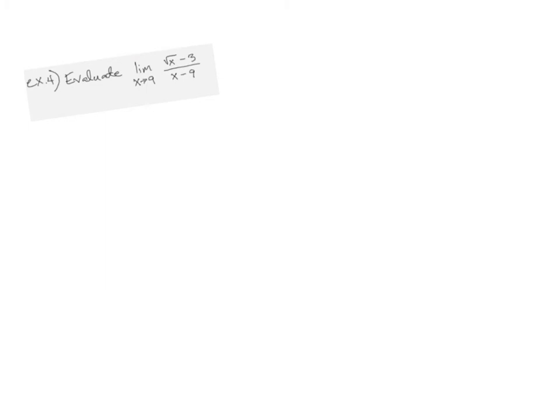So we've got two tools in our tool belt: simplify and factor. The last one I'm going to show you is when you've got a radical in the numerator. We can deal with that by multiplying by the conjugate. In pre-calc you rationalized denominators, but in calculus we're going to occasionally rationalize a numerator to help us simplify. The way to do that is to multiply by the conjugate.